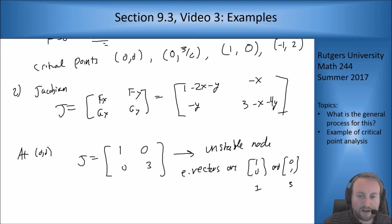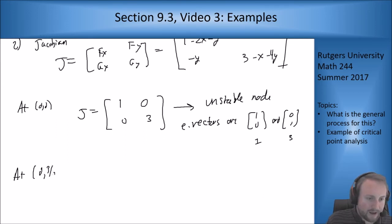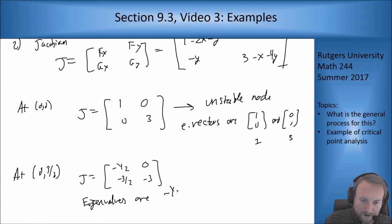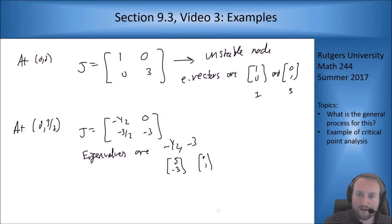At (0, 3/2), J is [-1/2, 0; -3/2, -3]. The eigenvalues are -1/2 and -3. For -1/2 I get eigenvector (5, -3), and for -3 I get eigenvector (0,1). This is a stable node.